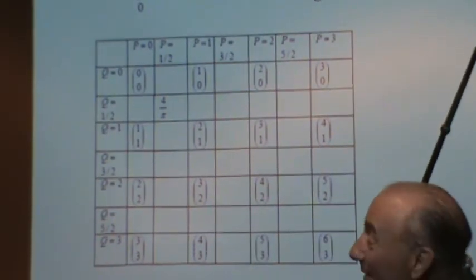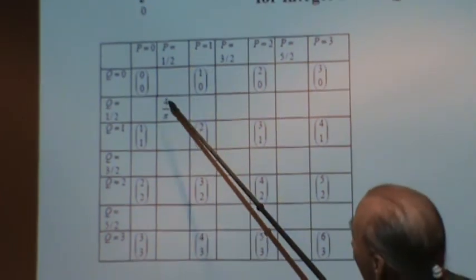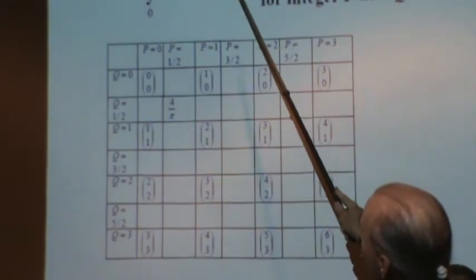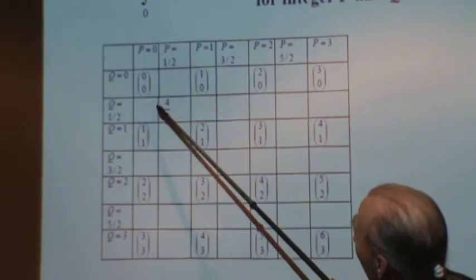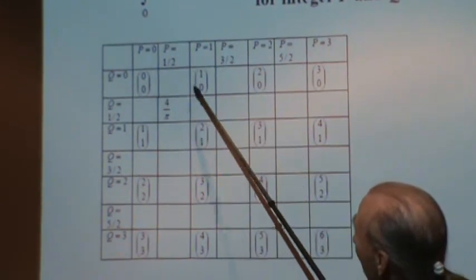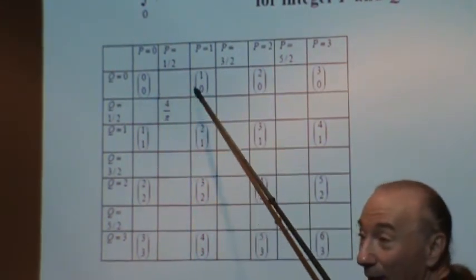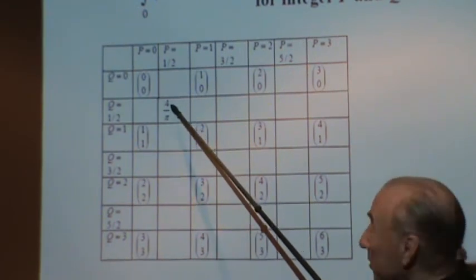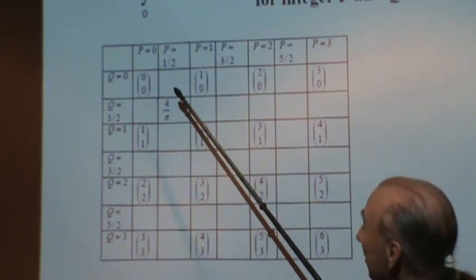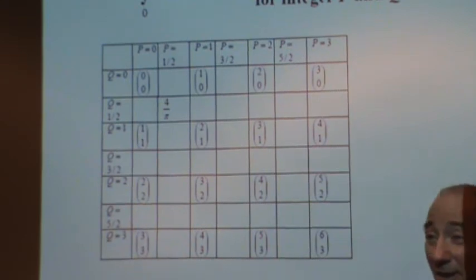Now, the thing he wants is right here. When p is a half, taking the square root, and when q is a half. Because that's four over π. Remember, it's the reciprocal. So, it's four over π. That's what he wants to get, but he doesn't know that.